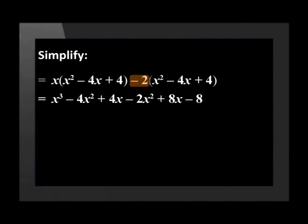-2 times x² is -2x². -2 times -4x is +8x. -2 times +4 is -8.